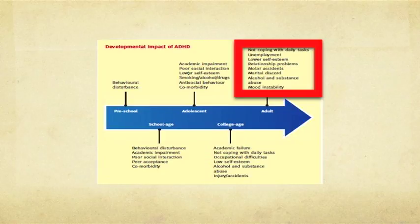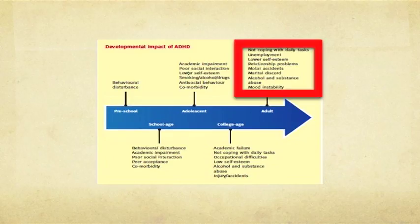For adults, it's a continuation of difficulty coping with daily tasks. Unemployment is a concern, but for many adults a bigger issue is underemployment — for example, a very bright, capable 28-year-old living in their parents' garage delivering pizzas, when they could actually own a franchise. Low self-esteem, relationship problems, motor accidents, marital difficulties, and continued risk for alcohol and substance use and mood instability are all common.